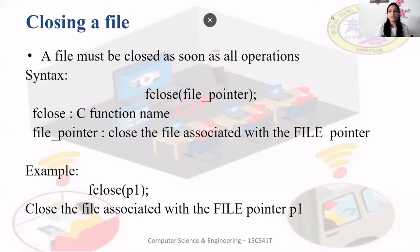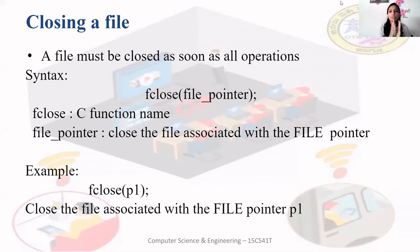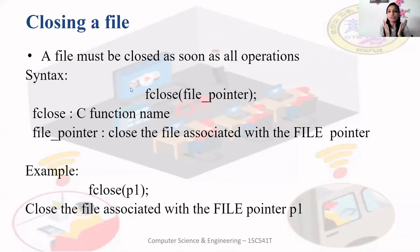How to close a file: we had opened the file using a file pointer by declaring FILE* and any file pointer name. A file must be closed as soon as all operations are done. If you don't close it, misuse of the file will take place. To avoid misuse, we must close the file. The function to close a file is fclose.